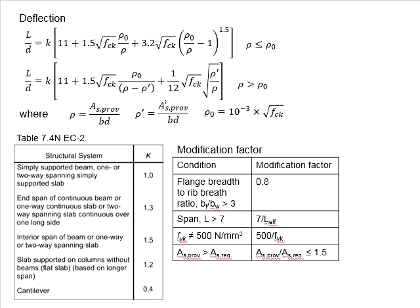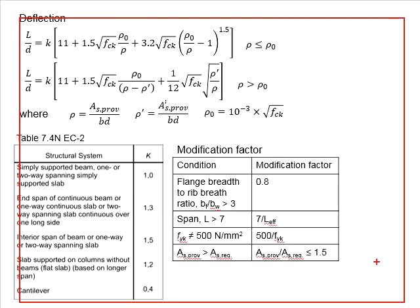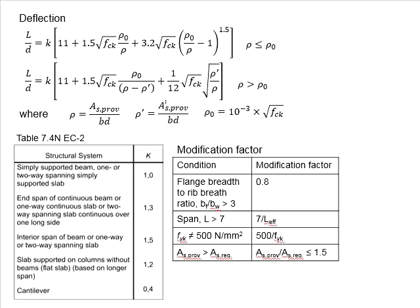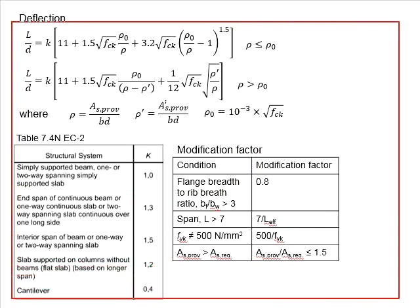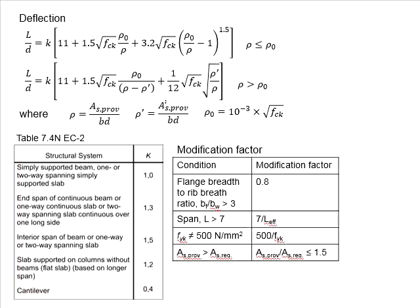This slide presents how do we calculate for the deflection limit. What you see here, the calculation steps for the deflection is actually totally same as the reinforced concrete member. There are two equations for the L over D, depending on the percentage of the reinforcement bar in the section, whether it is greater or lesser than the rho_0. The rho_0 is in the functions of fck, which is concrete strength.